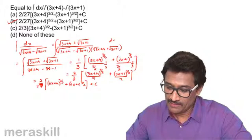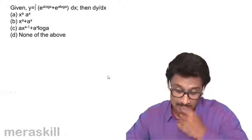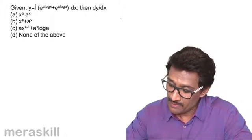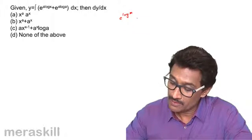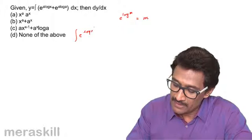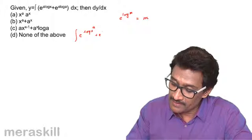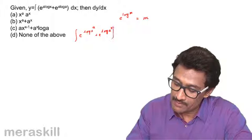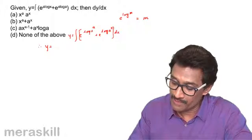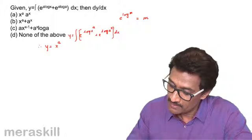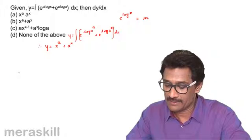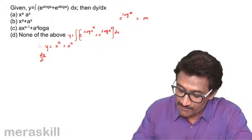Now we have y equals e raised to a log x plus e raised to x log a. We use the identity that e raised to log of any number is the number itself. So e raised to a log x equals x raised to a, and e raised to x log a equals a raised to x. Therefore y is x raised to a plus a raised to x.